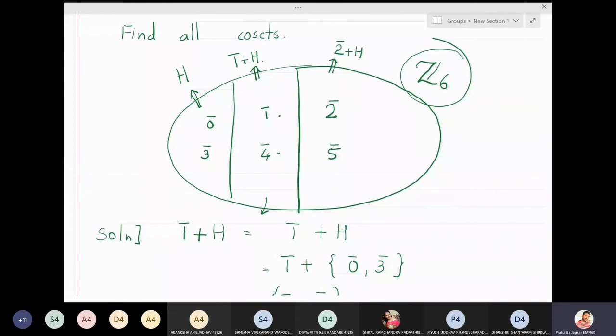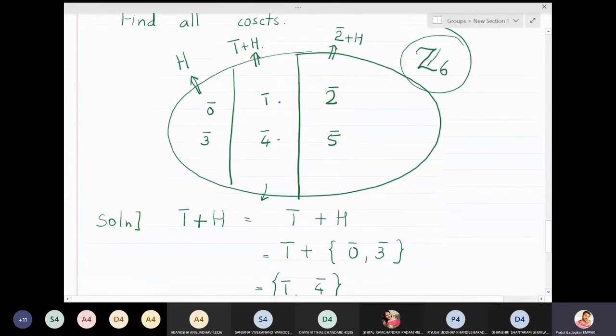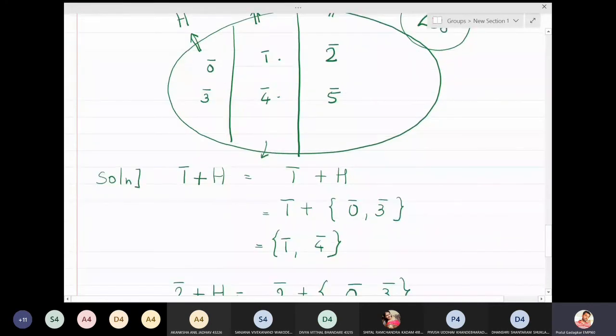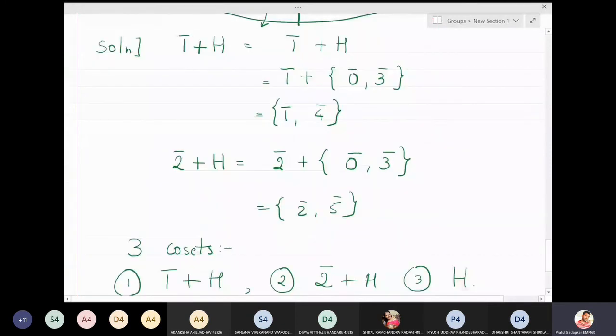When I take H and then 1̄ + H and 2̄ + H, if I take union of all these cosets, that union will come out to be the entire group. For example, H is {0, 3}, 1̄ + H is {1, 4}, 2̄ + H is {2, 5}. When I take the union of all these sets, the union will come up to be the entire group.